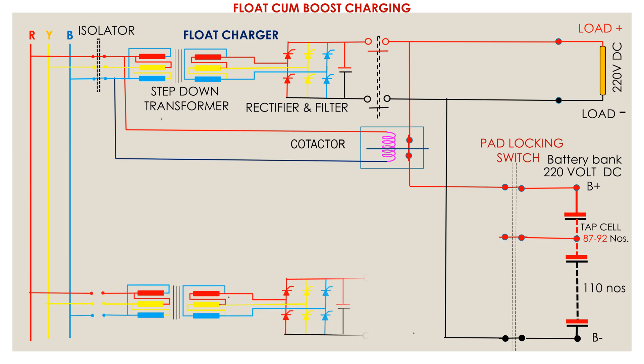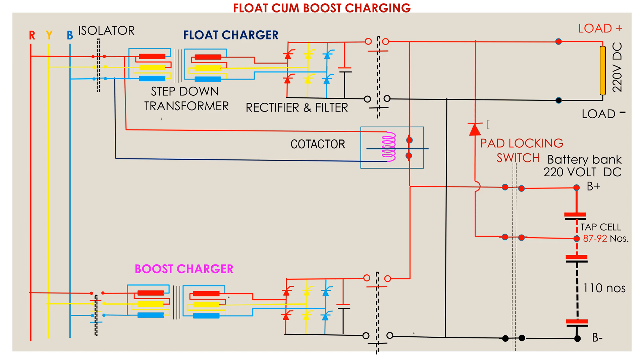This is the boost charger. The positive terminal of the tap cell is connected with the load's positive terminal through a diode. During float charging, the float charging current cannot flow to the battery cell through this way due to the presence of this diode.